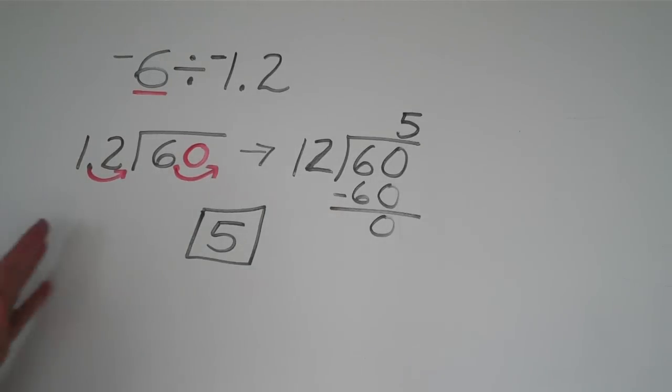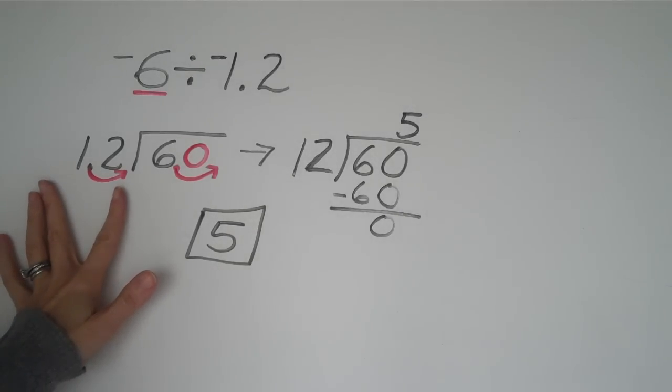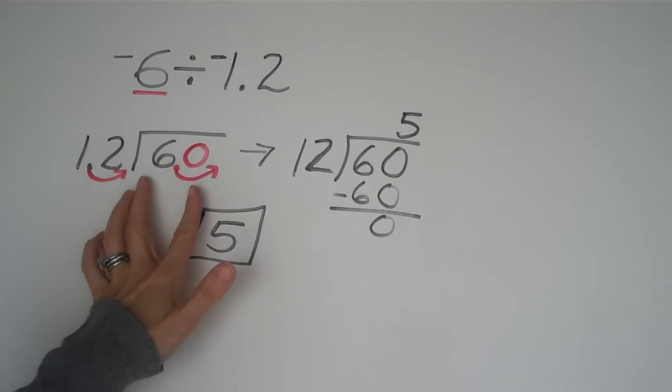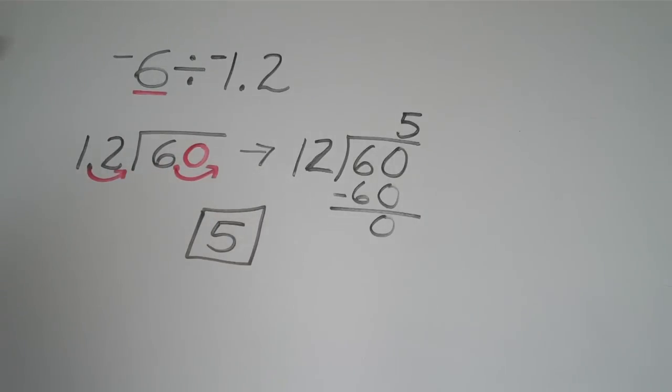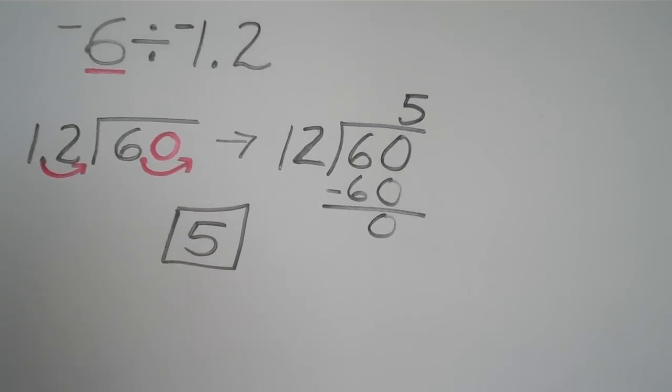But the rule is still going to be the same in every problem we do. We have to move the decimal over here to make it a whole number. And then we're going to move the same amount of spaces in the dividend as well. Let's do another problem.